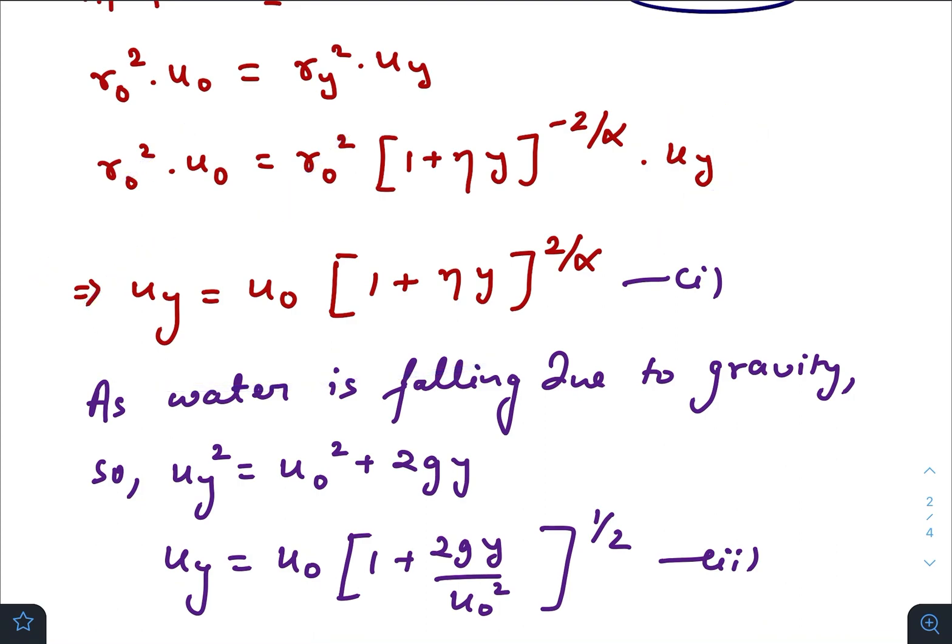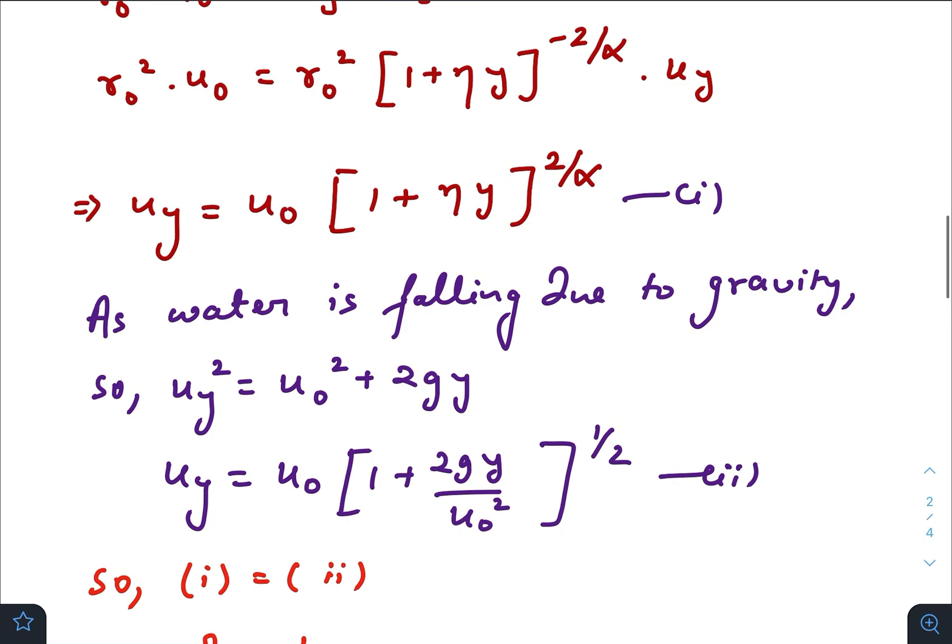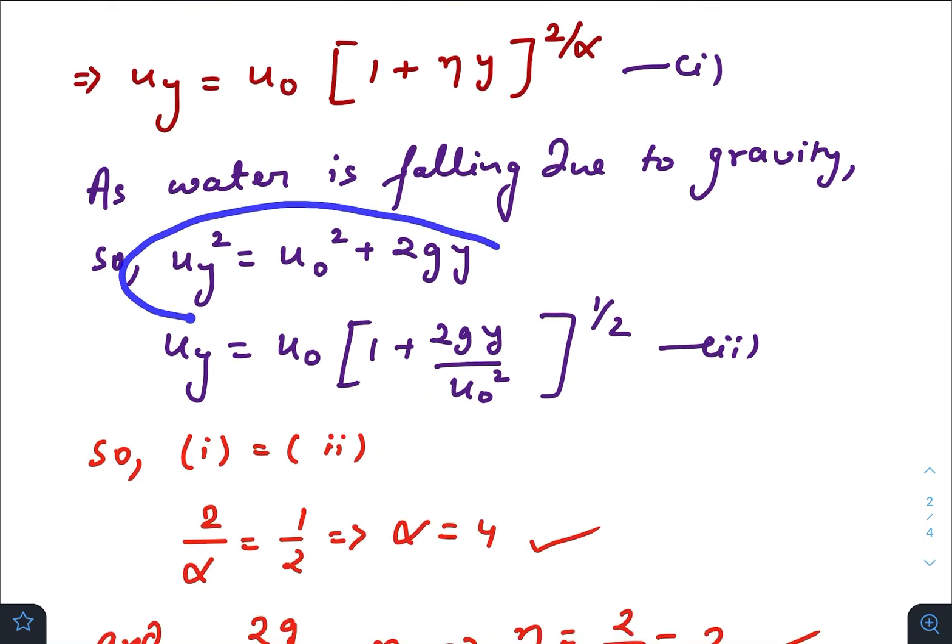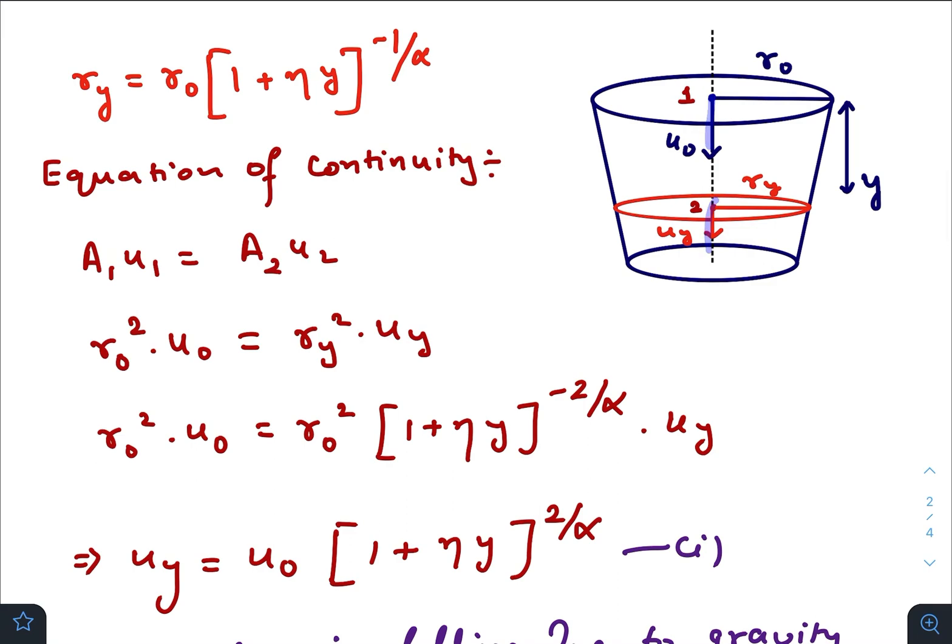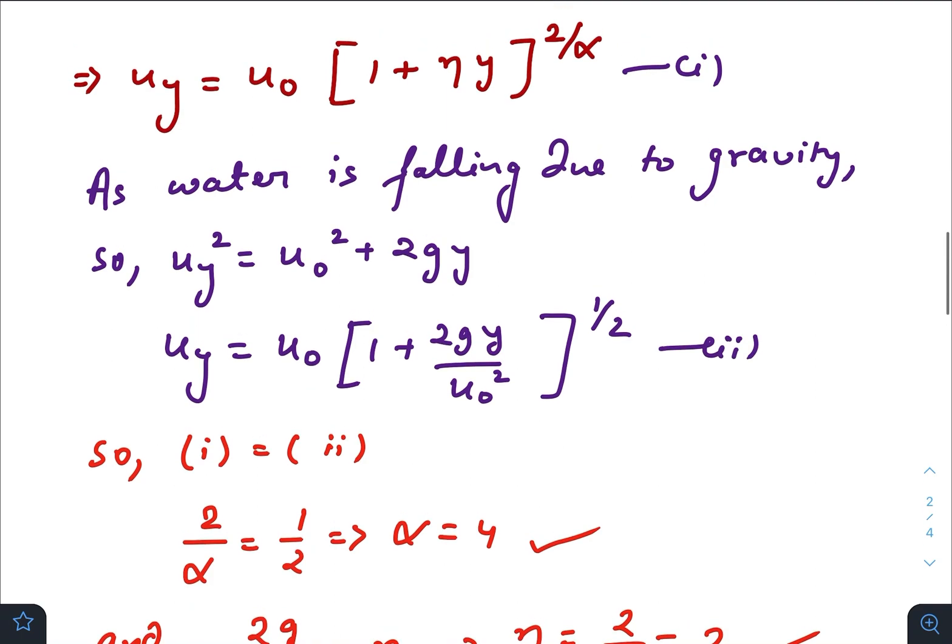Now, as the water is falling due to gravity, we can write that u_y square equals u naught square plus 2 g y, because it is falling due to constant gravitational force.